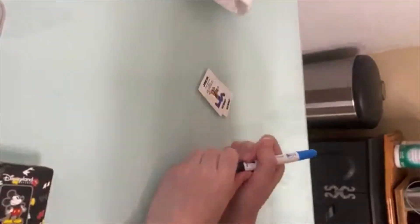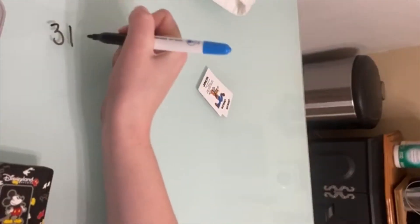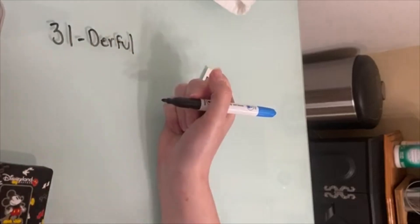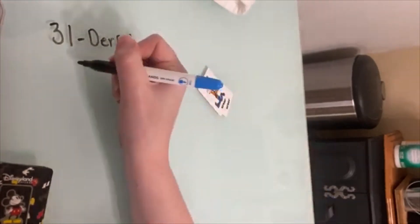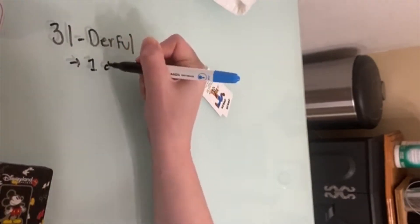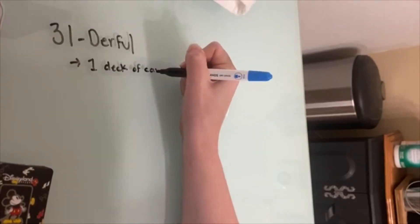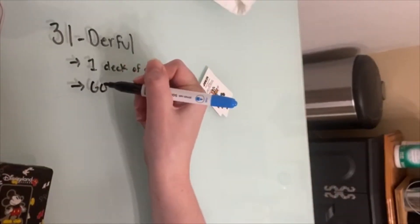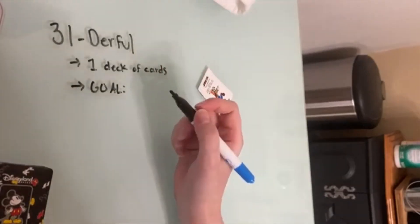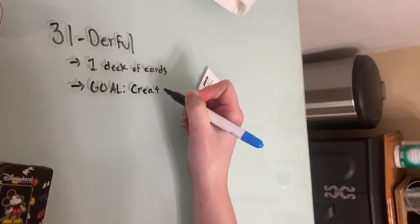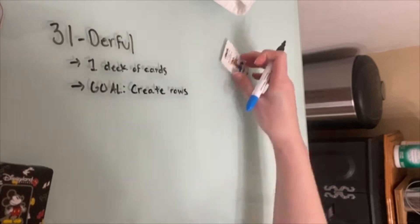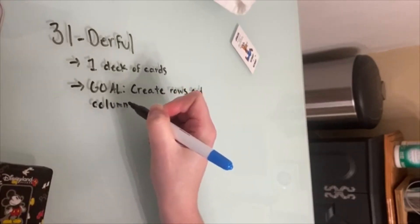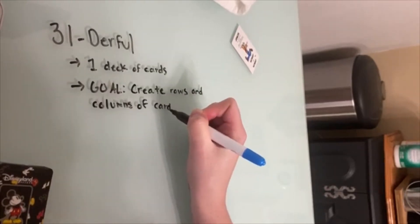Hey guys, it's Ms. Demetrio. I'm going to show you how to play a game called 30 Wonderful. For this game, you need one deck of cards, and that's about it. Now your goal of this game is to create rows and columns of cards with the sum of 31.